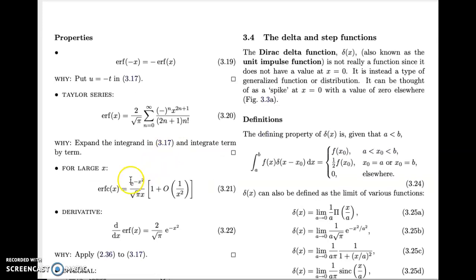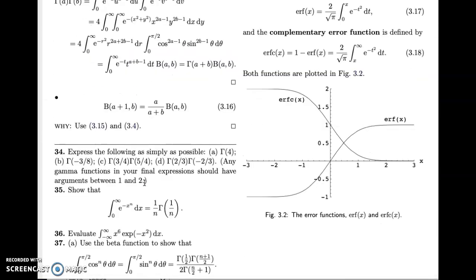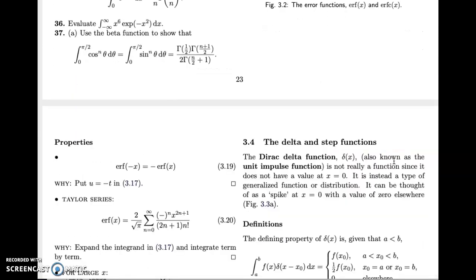It's possible to show, this is sometimes useful, that for large x, erfc goes off like e to the minus x squared over root x. So that's basically what we're seeing here. Sometimes you might need that approximation.